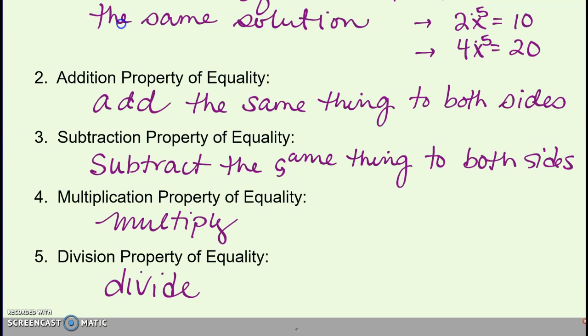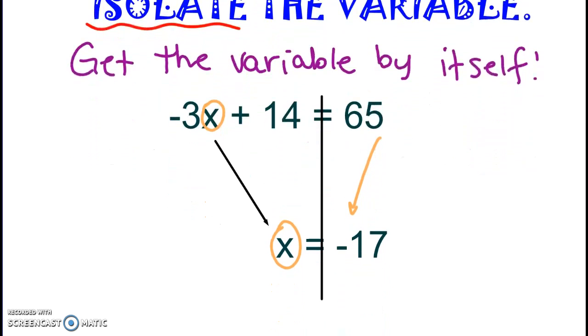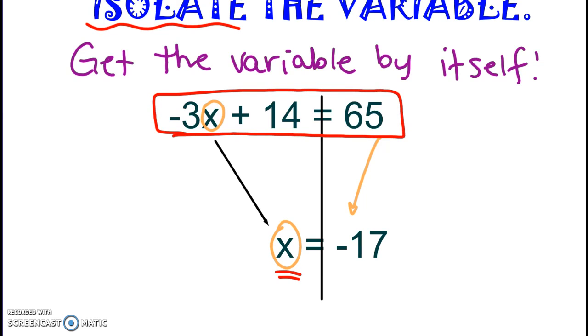We're going to use this idea to help us solve equations. Whenever we solve equations, we always have the same goal: to get the variable alone, or isolate the variable. Isolate means to get it by itself. For example, starting with negative 3x plus 14 equals 65, we want to work down until the variable is all alone. That means the isolated variable will be our solution. The goal is always to work until x, or whatever variable, is by itself.